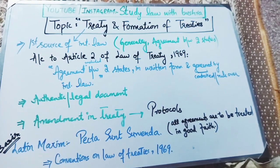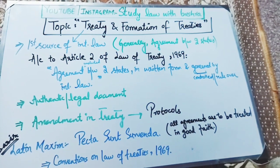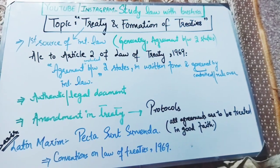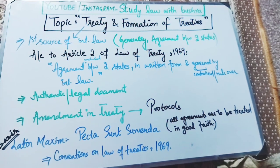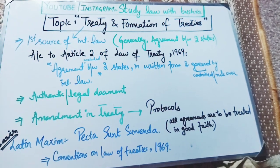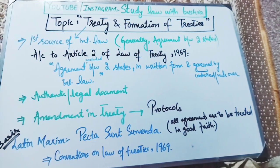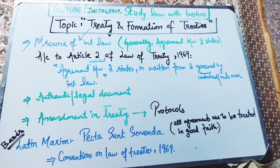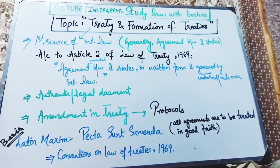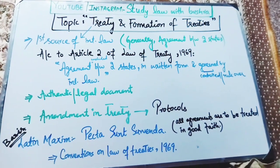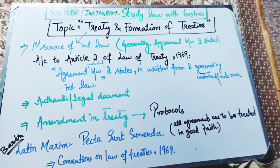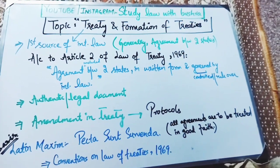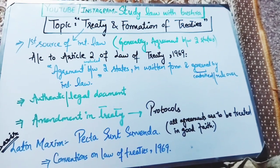What is the basis of treaties? The basis of the binding force of the law of treaties is, firstly, the Latin maxim 'pacta sunt servanda', which means that all agreements are to be treated in good faith — the intention must be good. Secondly, the Convention on the Law of Treaties 1969, which defined the treaty. Treaties are based on these two things: the Latin maxim pacta sunt servanda, and the Convention on the Law of Treaties passed on 23rd May 1969.